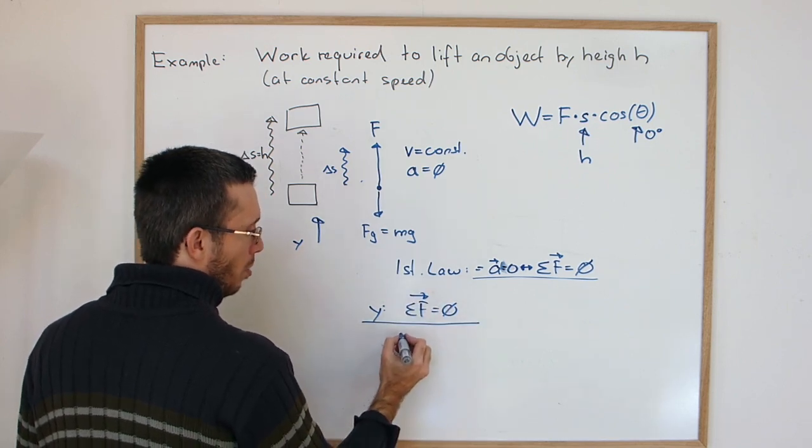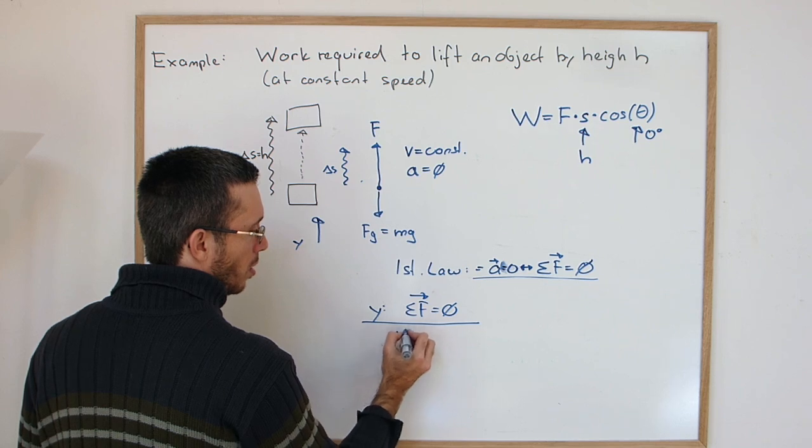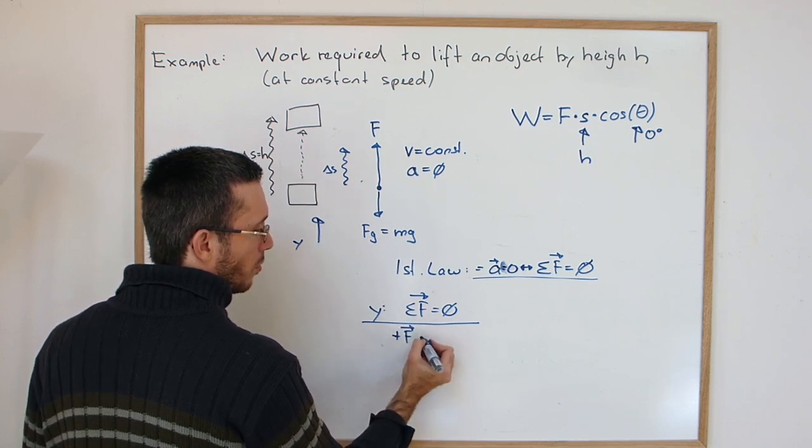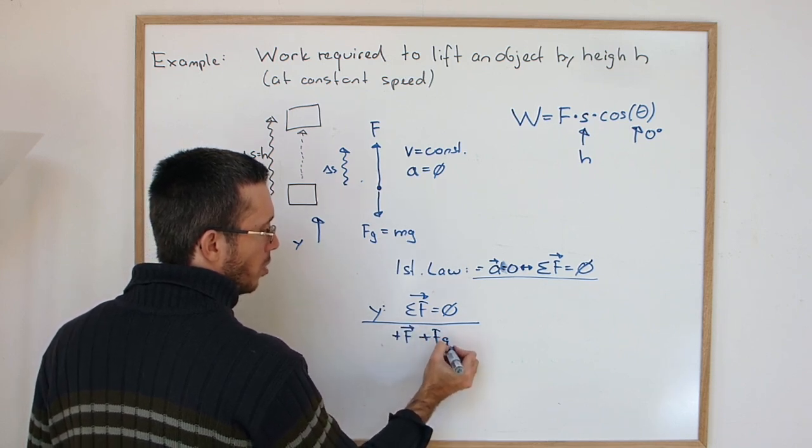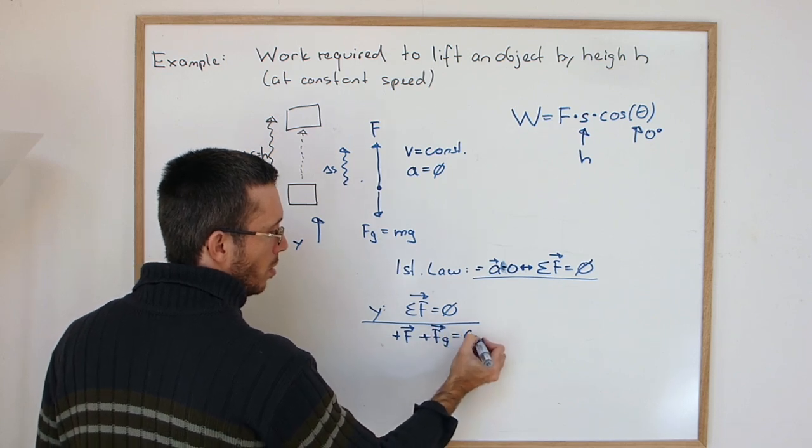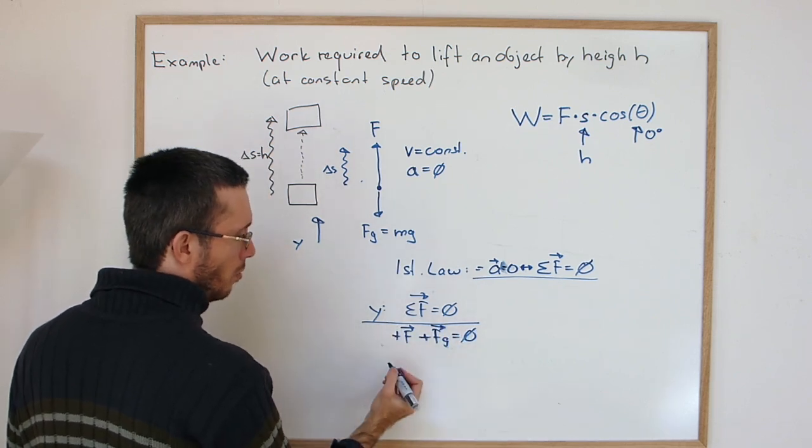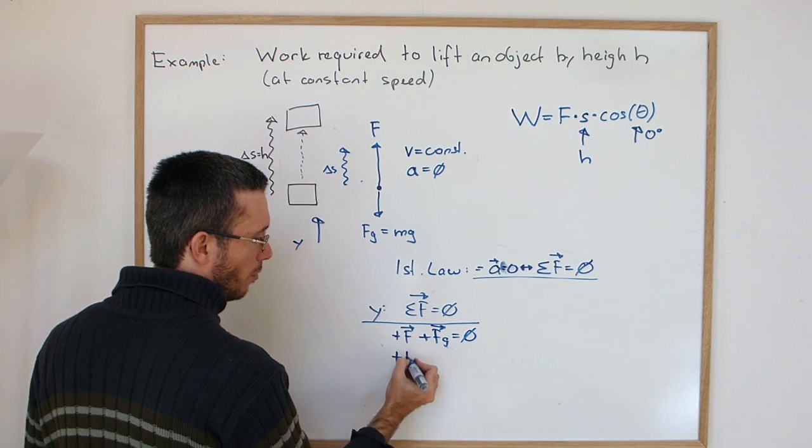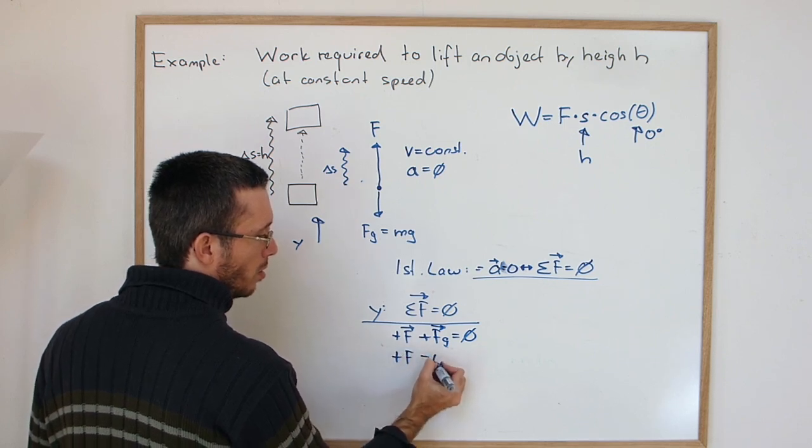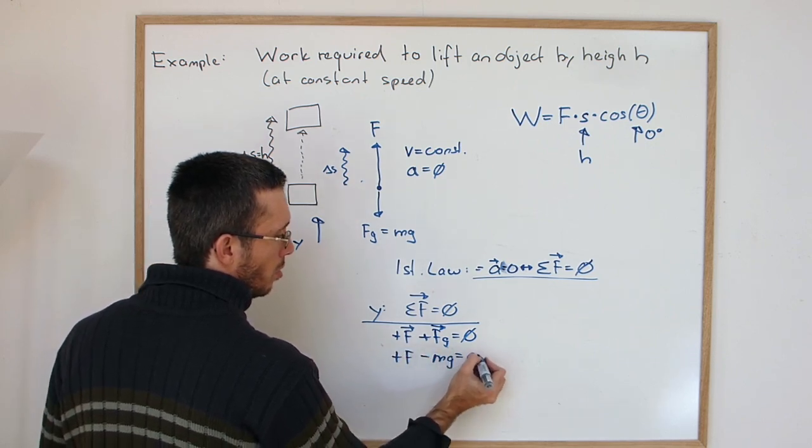So I have plus my force minus the force of gravity. So if I look at the directions, I have plus the force and I go up and minus mg is zero.